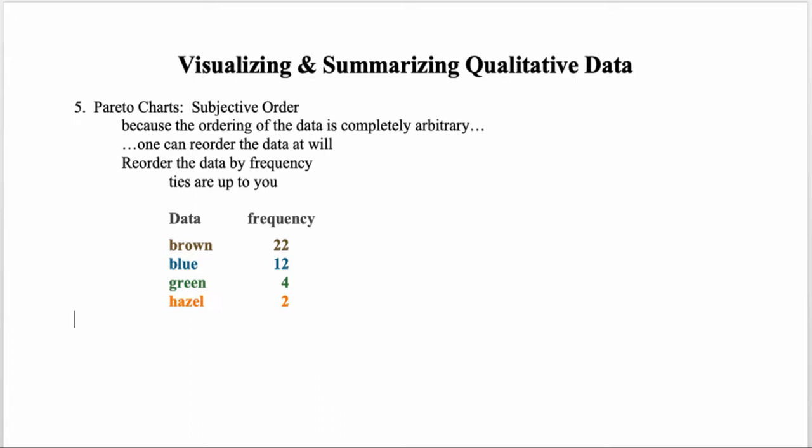Brown is the most frequently occurring value in the data set, often called the mode. Blue comes next with 12 people, then green with 4 individuals, and the least occurring color was hazel. The basic rule for Pareto charts is that bars are presented in descending order, so we've reordered our FDT from most to least frequently occurring.